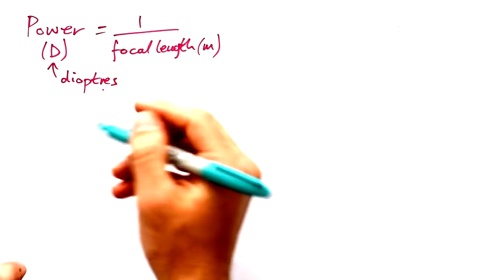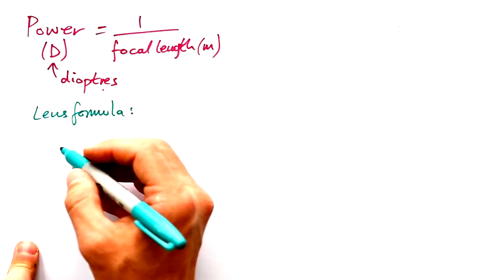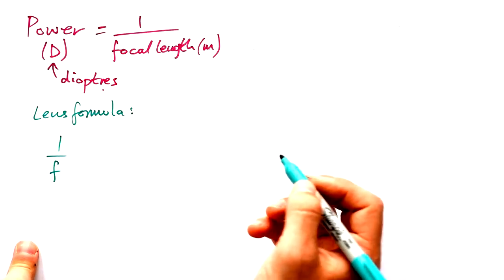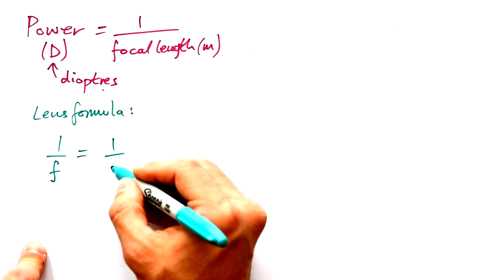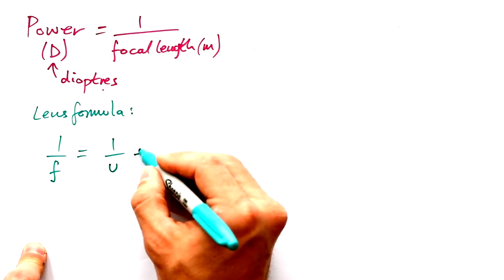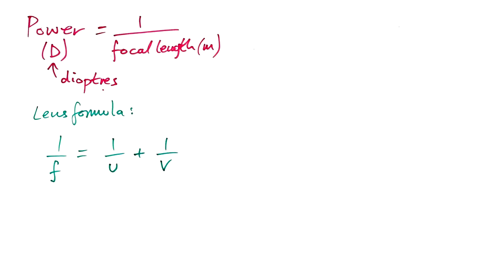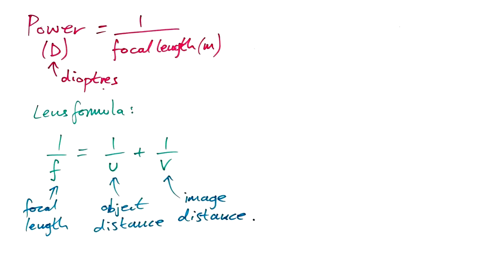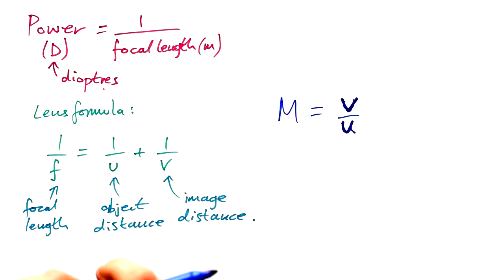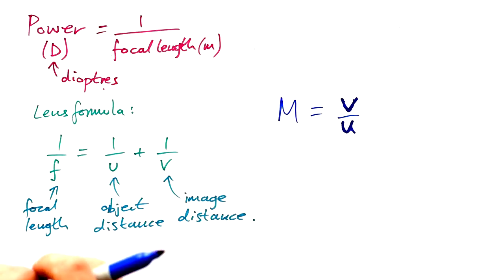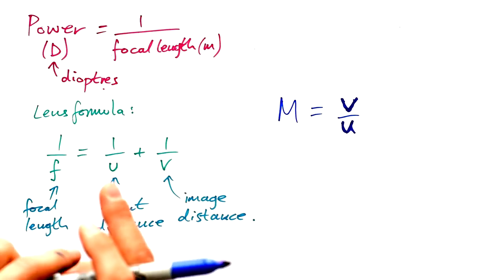We also have the lens formula, which gets used a lot — you don't need to derive it, just use it. 1 over F equals 1 over the object distance plus 1 over the image distance. If you can measure two of these three things, you can figure out the third. The magnification equation can be rewritten as M equals V over U, where V is the image distance and U is the object distance — or you can swap these for the heights of the object and the image.